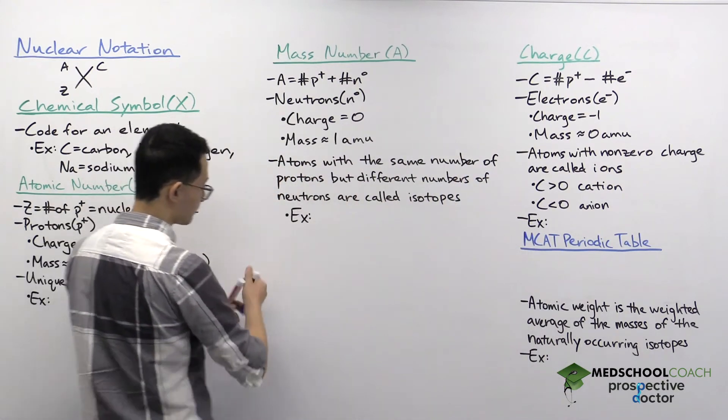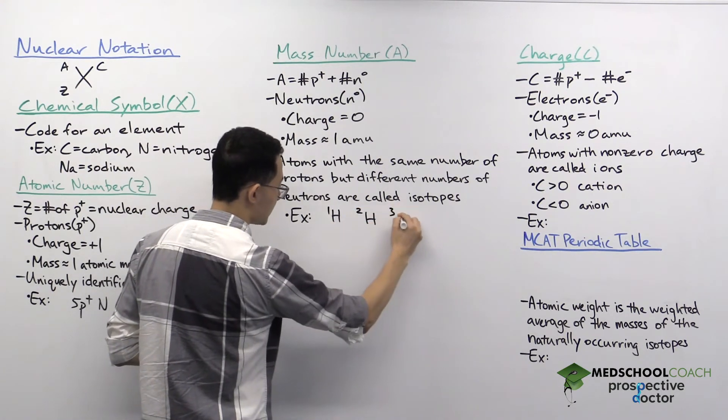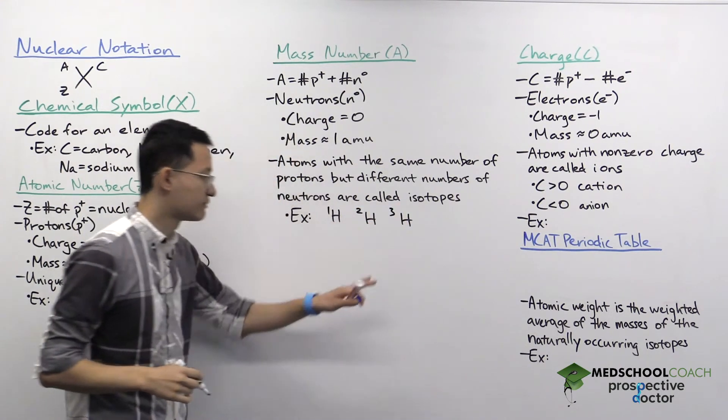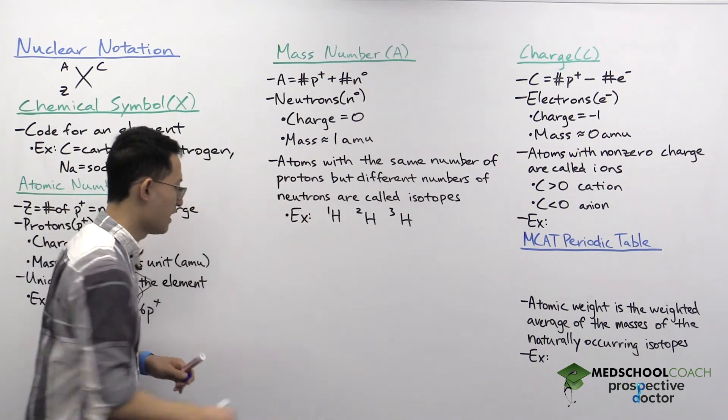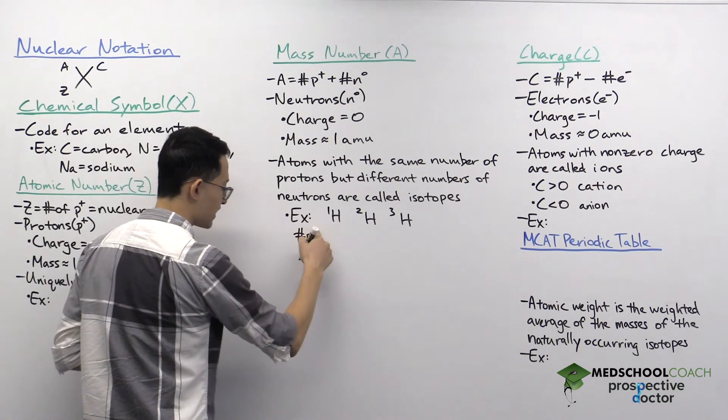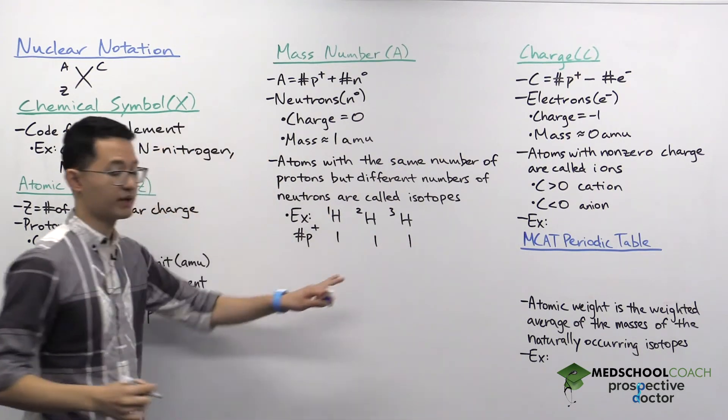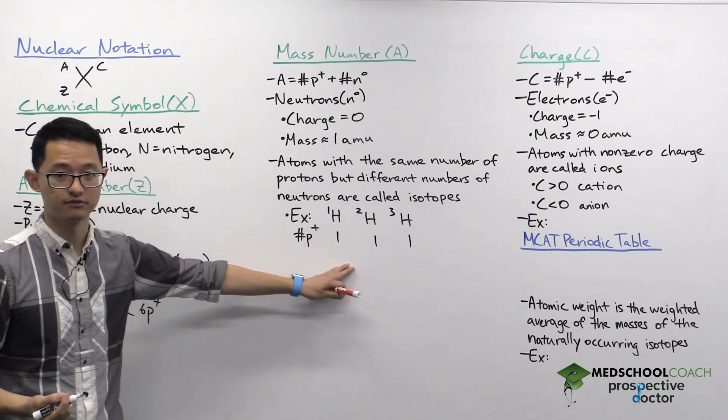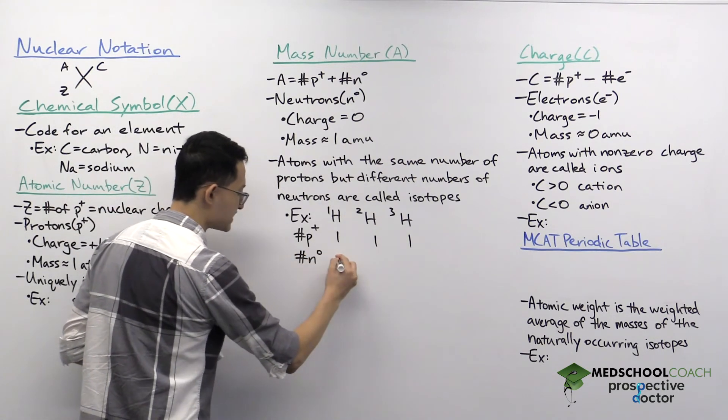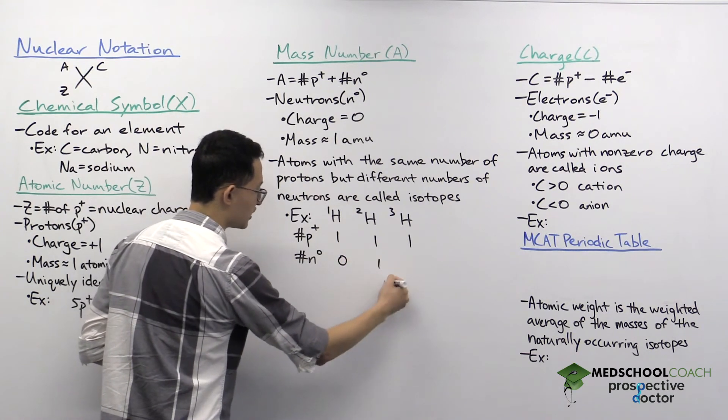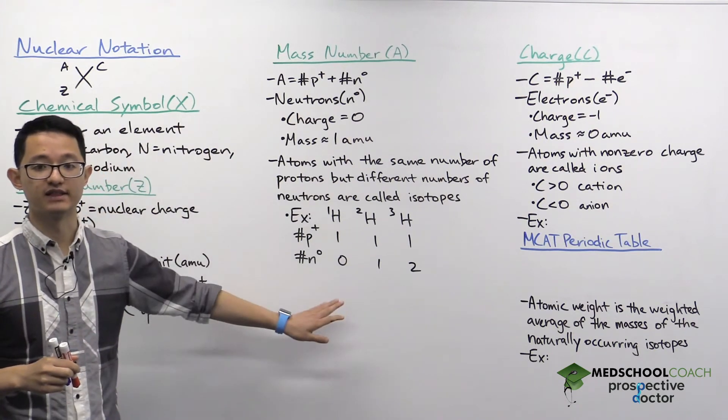So, as an example, we can consider the different isotopes for hydrogen where we can have protium, deuterium, and tritium. Now, you can see from the nuclear notation here that they have different mass numbers of one, two, and three. However, when you look at the number of protons in each of these isotopes, you're going to see that they all have one proton, which makes sense because they're all hydrogen atoms after all. Now, if we take a look at the number of neutrons, we're going to see that protium has zero neutrons, deuterium has one neutron, and tritium has two neutrons. So that explains the differences in the mass numbers.